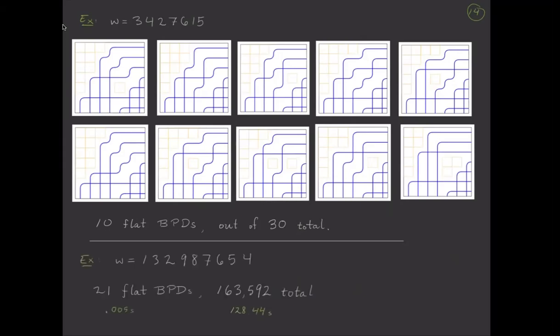You can get somewhat more efficient. So if we do the permutation one, three, two, nine, eight, seven, six, five, four, that has over 163,000 bumpless pipe dreams and 21 of them are flat. And using Julia, which I'm going to blame Anders for convincing me to try to start doing, it takes essentially no time to compute the flat ones and a little bit of time to compute all of them.